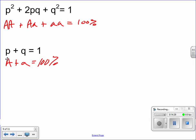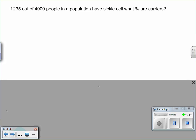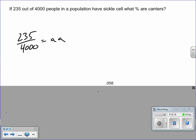Here's the first problem. If 235 out of 4,000 people in a population have sickle cell, what percent are carriers? AP is going to expect that you understand stuff we've learned in previous chapters about genetics and that sickle cell is a recessive disease. So we're talking about 235 individuals out of 4,000 are little a little a. If we divide that out, we're talking about a number that is 0.058 or 5.8% of the population is going to be little a little a.